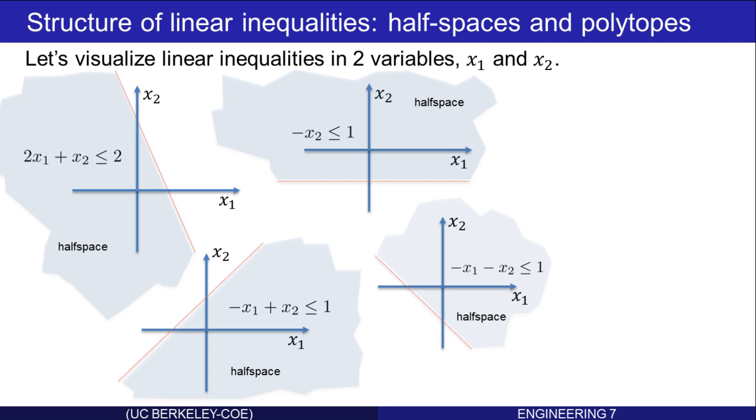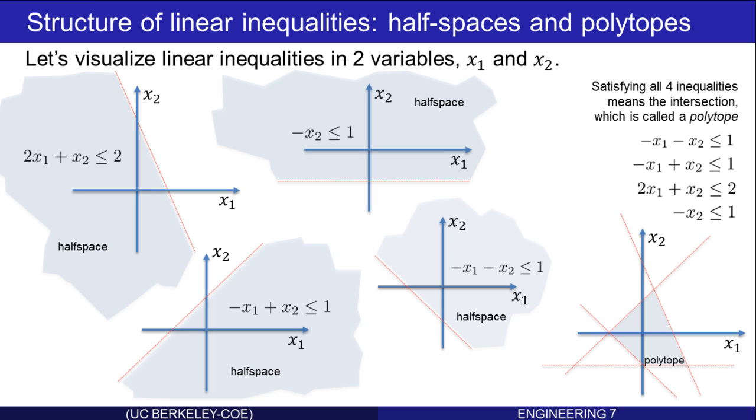So here we have four linear inequalities. The set of points which satisfy each one of them individually is a half space. What about the set of points that satisfy all four of these inequalities? Meaning the intersection. Well, that just looks like this polytope. It's the intersection of those four half spaces. And in fact, we'll call it the feasible set of these four inequalities. Any point in that blue shaded region, the polytope, satisfies all four of the inequalities, and any point outside violates at least one of them. The feasible set of the inequalities are only those points which satisfy all of the inequalities.